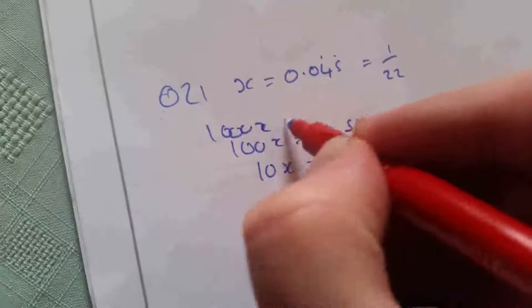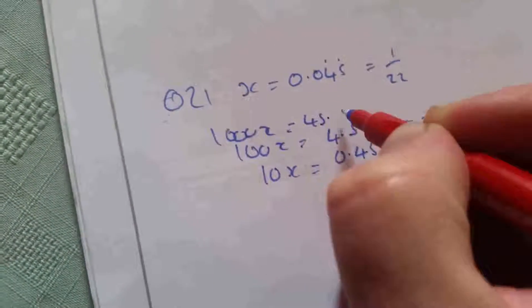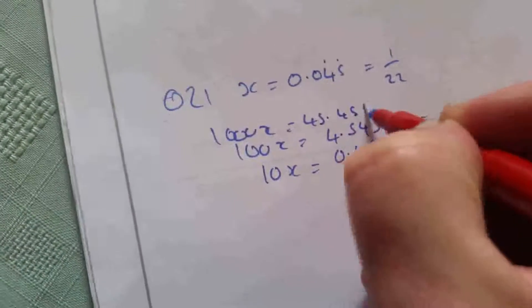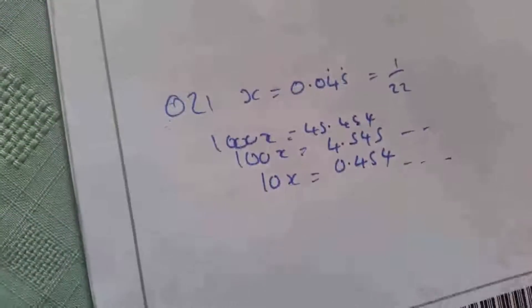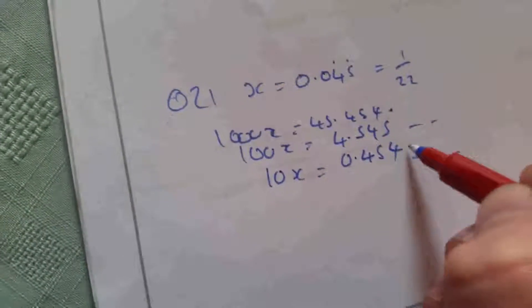...and 1000x is going to be 45.454... What I'm looking for is to get the same decimals, which I've got in those two expressions.